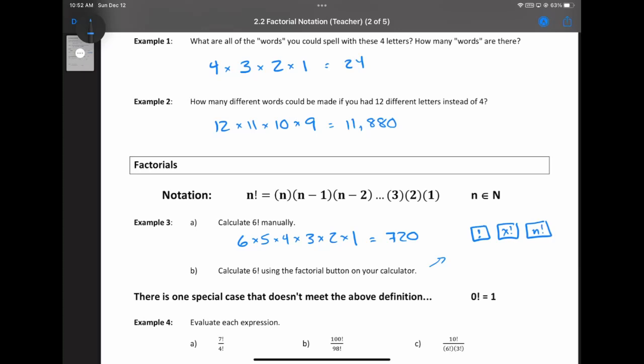Six factorial is just six times five times four times three times two times one. I think if you look at the examples that we did above, example one and two, you'll see why factorials actually come into play with real problem solving. Example two is a little bit different because you'll notice it starts at 12 but it ends at nine. It doesn't go all the way down to one. We're going to take a look at that in one second.